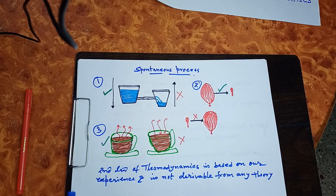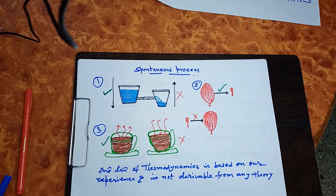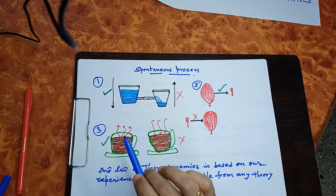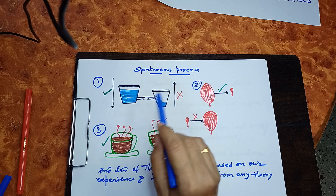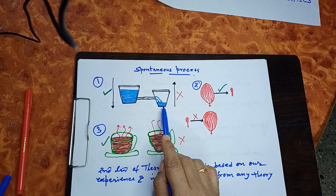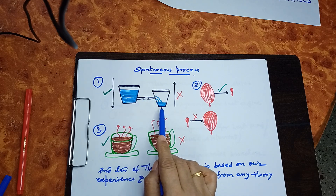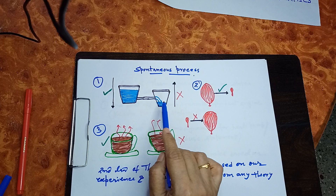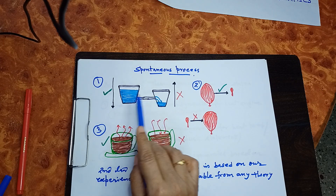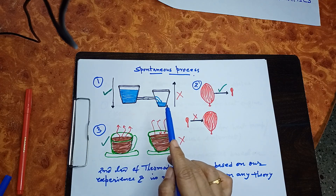In my earlier video, I already explained the limitations of the First Law of Thermodynamics and spoke about spontaneous processes. We know that water always flows from a high level to a low level — this is a spontaneous process. According to the First Law of Thermodynamics, this is an energy transformation: potential energy is converting to kinetic energy.